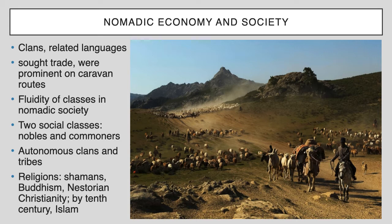They herded cattle, sheep, and goats, moving around and developing different languages, but because they came into contact with each other they also shared some common traits. The nomadic economy also depended on settled societies through trade. They were prominent on the caravan routes — when people traveled from the Abbasid Empire to China, they went through the steppes and encountered the nomads, who engaged in trade and also learned words and parts of the languages and cultures they encountered.